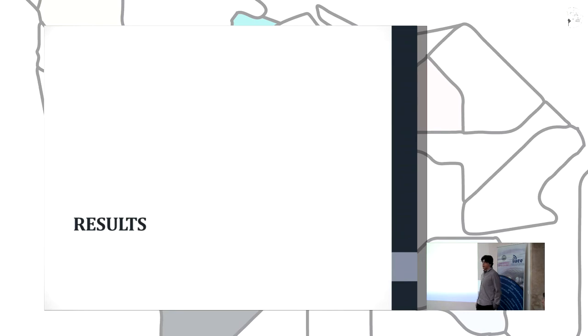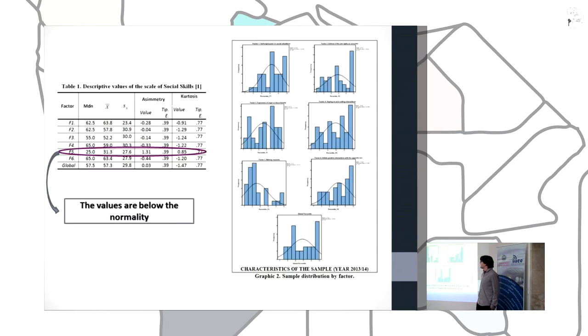Now we are going to expose the results of the study. In the descriptive values of the scale of social skills, we found normal positive values in the factors 1, 2, 3, 4 and 6. But in factor 5, there were values below the normality.